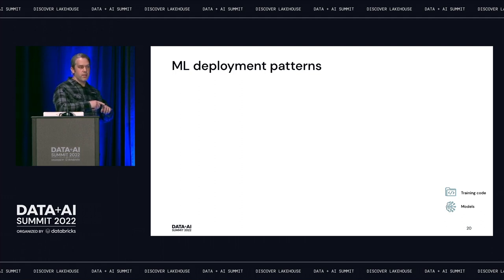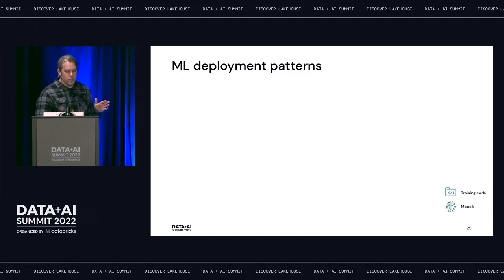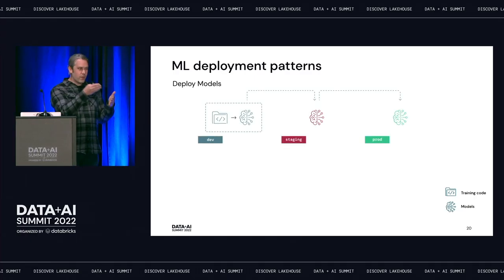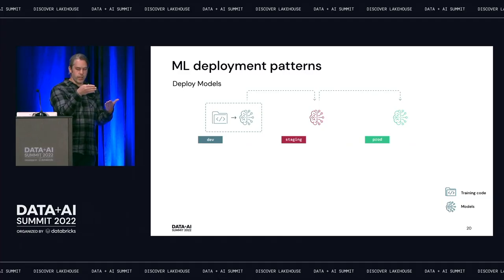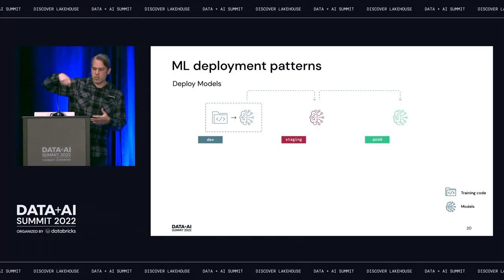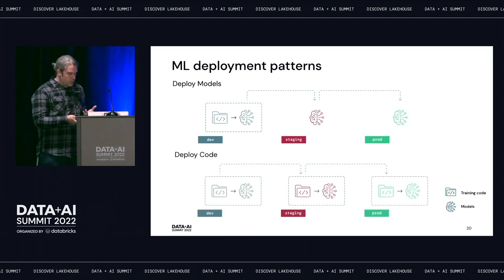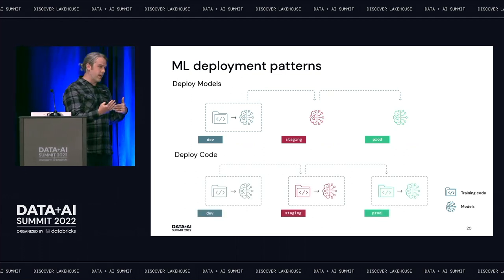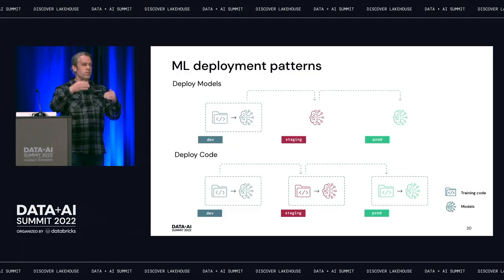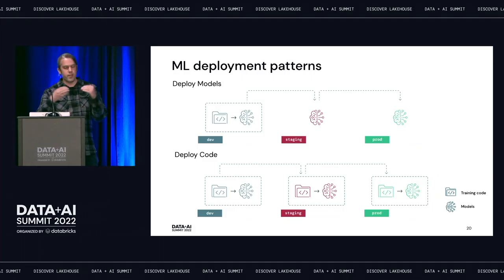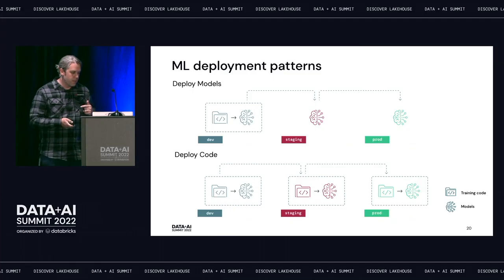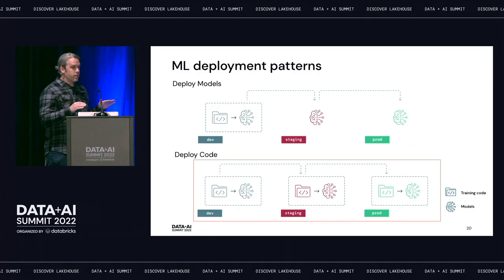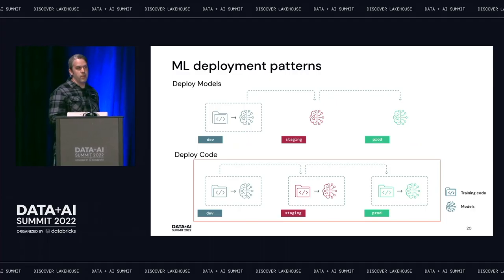There are two ways to deploy models into production. The first — 'deploy models' — focuses on the model artifact: you train in dev, move the artifact to staging, test it, then move to production if it passes. The second — 'deploy code' — promotes the process that builds the model artifact: you take your training code and deploy it to staging, then to production, training the model three times total. In this talk, we focus on the deploy code pattern — the reference architecture and demo are built entirely around this.